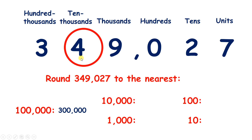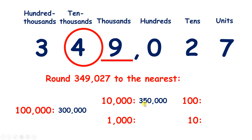Now to the nearest 10,000, if we look next door we have a 9 — which means we need to raise the score: we need to change that 4 to a 5, so that leaves us with 350,000.